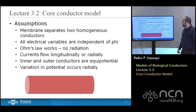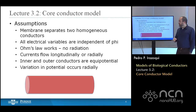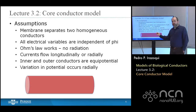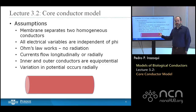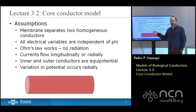We'll make some assumptions. First, the membrane separates two homogeneous conductors, so the material inside the neuron is homogeneous. We know that's not exactly true, but we can approximate it as a homogeneous conductor, and electrically that approximation holds up pretty well. We do the same for the outside — the extracellular fluid in which the neuron sits is homogeneous.